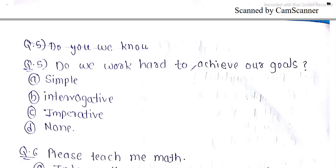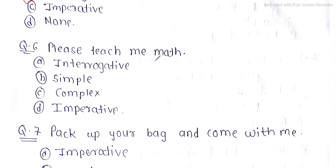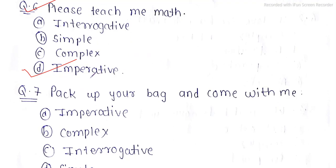Question 5: 'Do we work hard to achieve our goals?' — question mark is there, so this is an interrogative sentence. Question 6: 'Please teach me math.' — here we are making a request, so this is an imperative sentence. Imperative sentences include requests, commands, and advice.